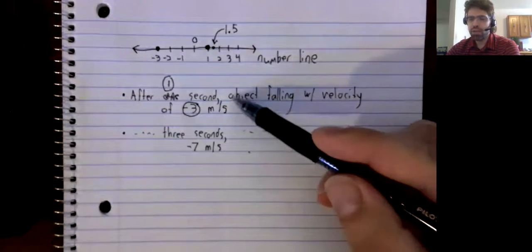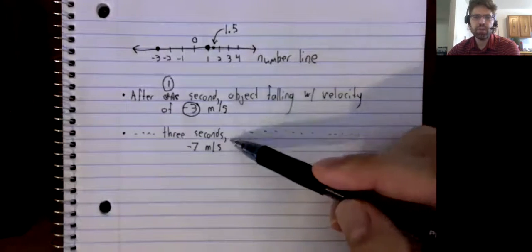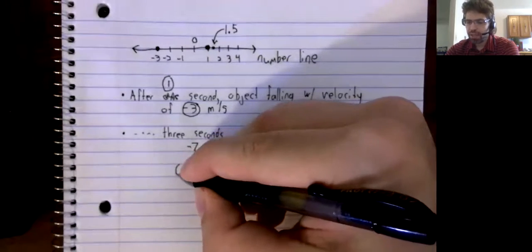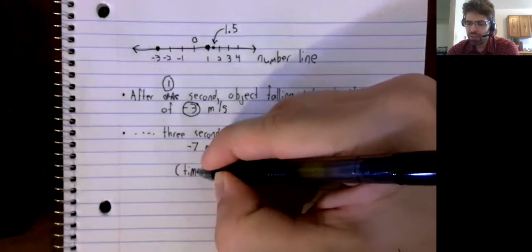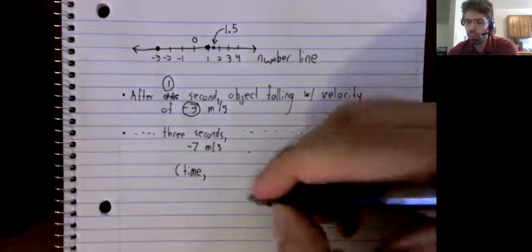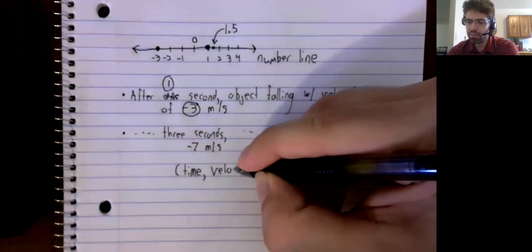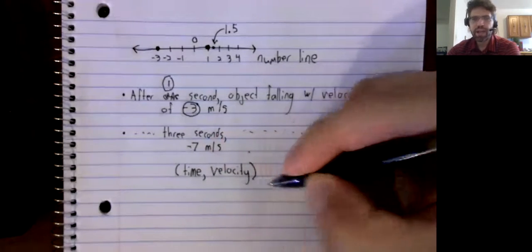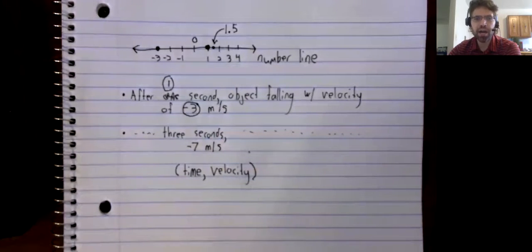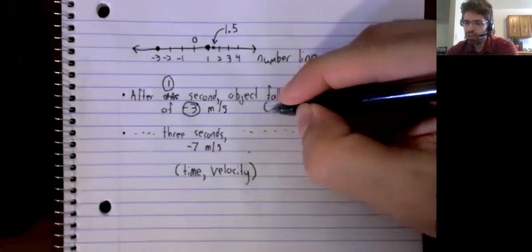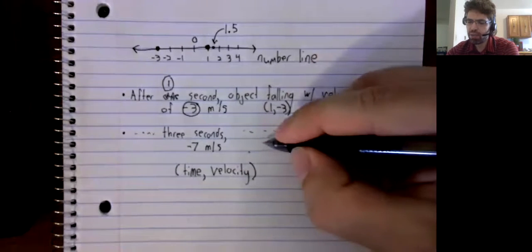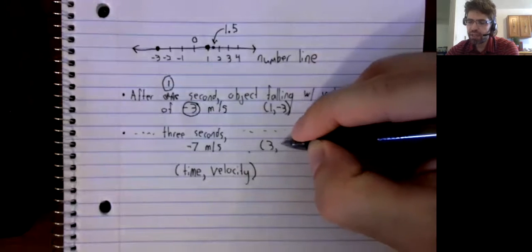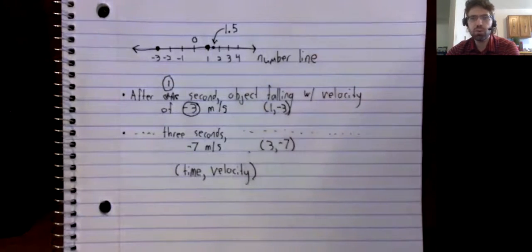So we look at both of these data points and think a little. I've been giving it away by using the phrase 'data points.' It occurs to us that we could store this information as ordered pairs — time comma velocity. So this first piece of data would be stored like this: one comma negative three. And this second piece of data could be stored like this: three comma negative seven.